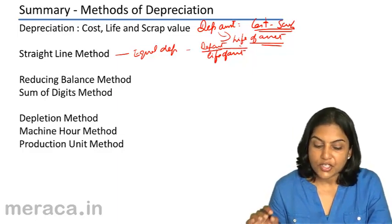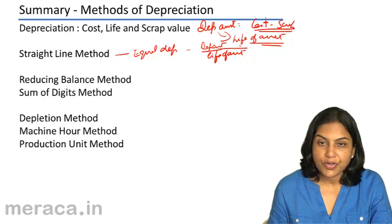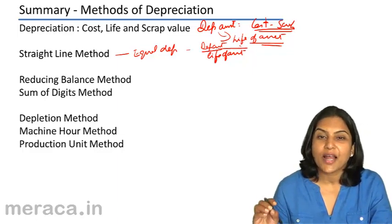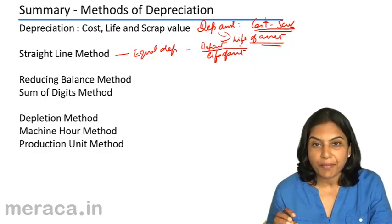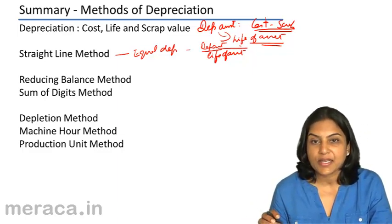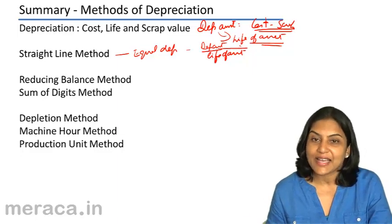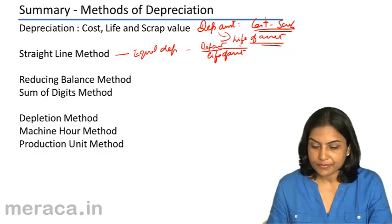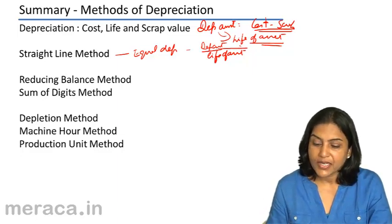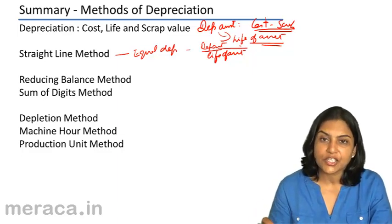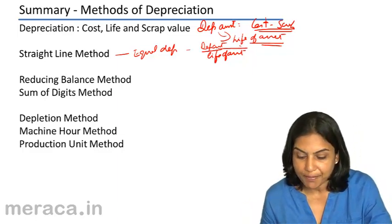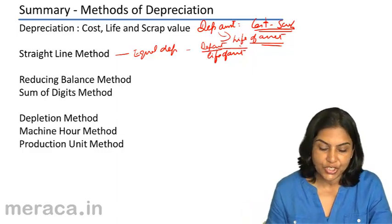The straight line method is normally used with assets where a large amount of repairs is not expected as the asset gets older. It is simple and easy to compute, and once computed, the same amount of depreciation is applicable each year.